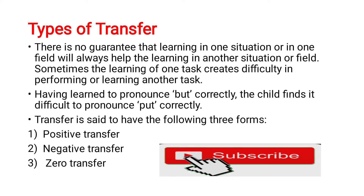Moving on to the types of transfer of learning. There is no guarantee that learning in one situation will always help you learn in another situation — it may or it may not help. For example, having learned to pronounce 'but' correctly, you cannot expect the child will also pronounce 'put' correctly. The child may have difficulty pronouncing 'put.' Transfer is said to occur in the following three forms: positive transfer, negative transfer, or zero transfer.